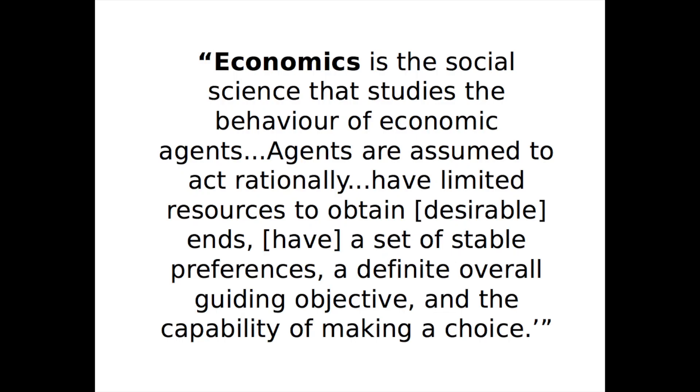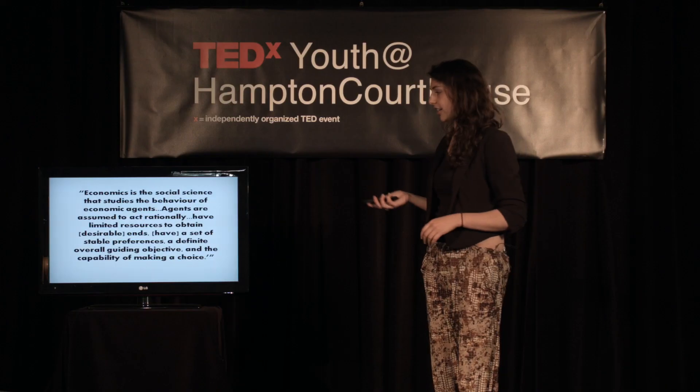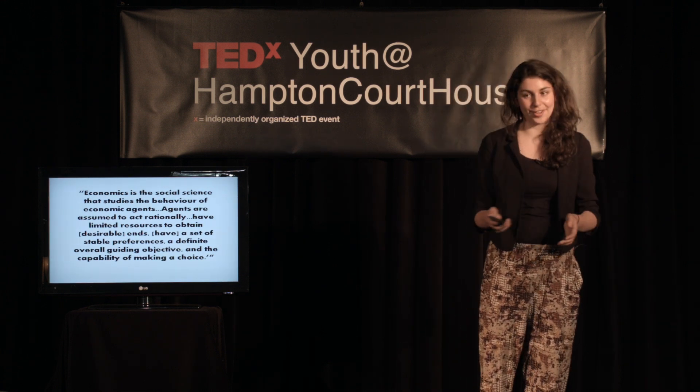To try and get to the bottom of how economics is defined at the moment, I did what any student does when trying to find out about something — I looked it up on Wikipedia. Economics is the social science that studies the behaviour of economic agents. Agents are assumed to act rationally, have limited resources to obtain desirable ends, have a set of stable preferences, a definite overall guiding objective, and the capability of making a choice. Economic agents is just people — people who are rational, know what they're doing, use the limited amount of stuff that they have to make decisions, and are totally capable of making that choice.